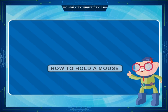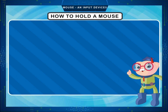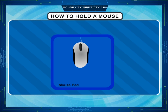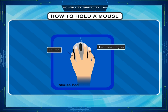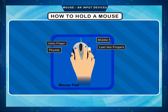How to hold a mouse. Keep the mouse on the mouse pad. Place your palm on the mouse. Hold it with your thumb and last two fingers. Place your index finger on the left button and your middle finger on the right button.